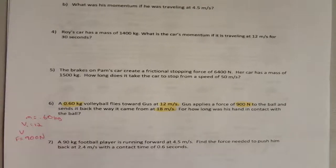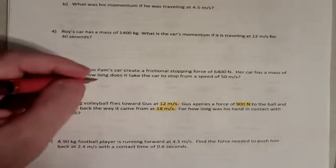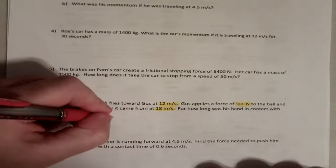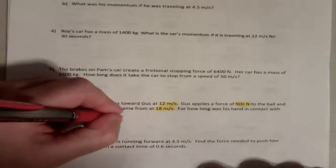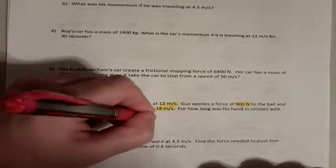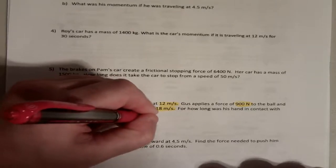And force equals 900 newtons. So, let's write our formula. Our formula is our impulse, which is force times change in time equals mass times change in velocity.